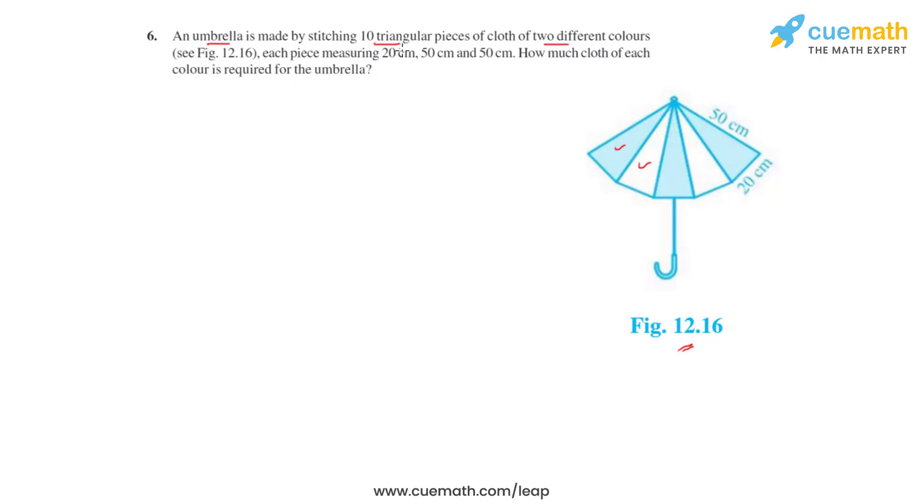Each piece measures 20 centimeters, 50 centimeters, and 50 centimeters. We need to find how much cloth of each color is required for making the umbrella. Let's first highlight one such triangular piece of cloth whose side lengths measure 50 centimeters, 20 centimeters, and 50 centimeters.